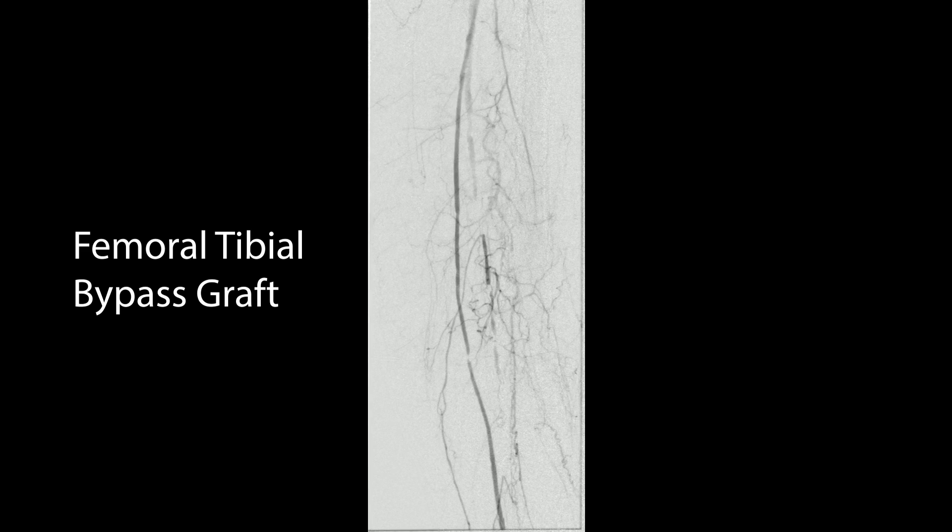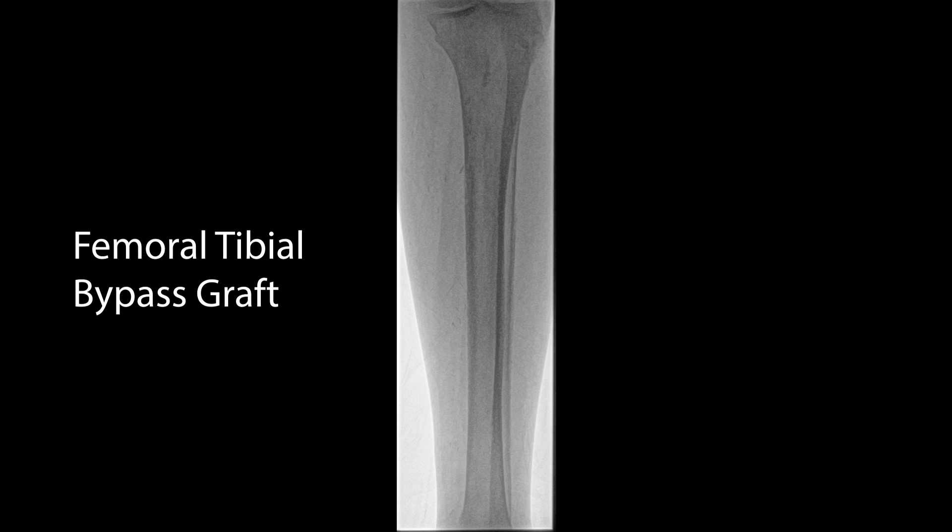The contracatheter followed over the wire allows us to do an initial arteriogram, which shows where the bypass graft is coming off. We can see the bypass graft going down, superimposed on top of the SFA. You can clearly see the stenosis in the graft itself and at the distal anastomosis. We're going to come back and treat those, with two-vessel runoff.